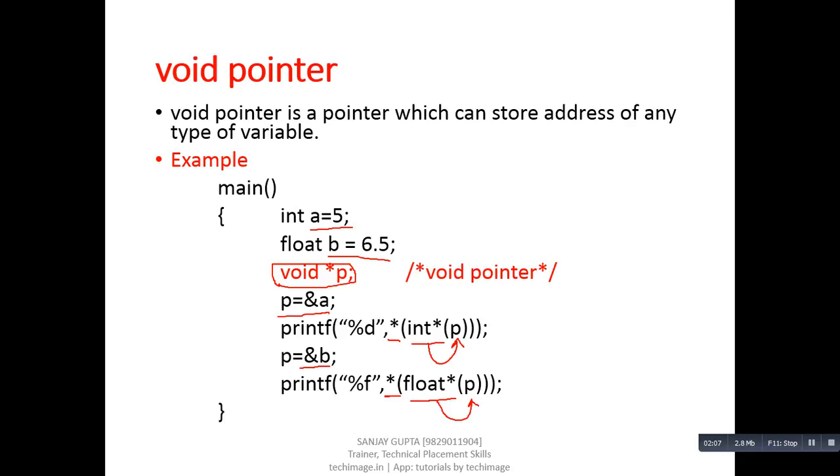So with the help of this example, we can conclude that a pointer of void type can store the address of any type of variable. If we want to dereference the address which the void pointer contains, we have to type cast it into a particular data type. Thank you.